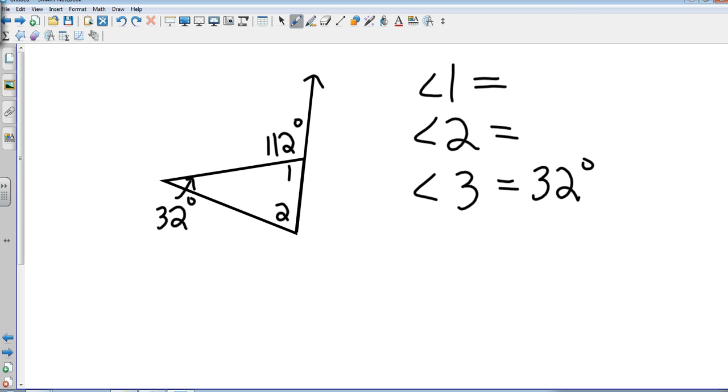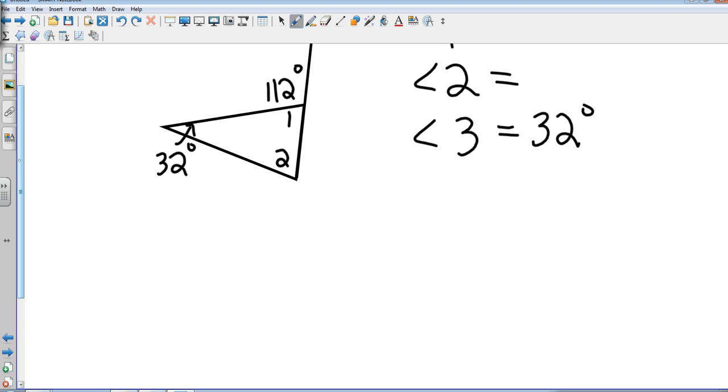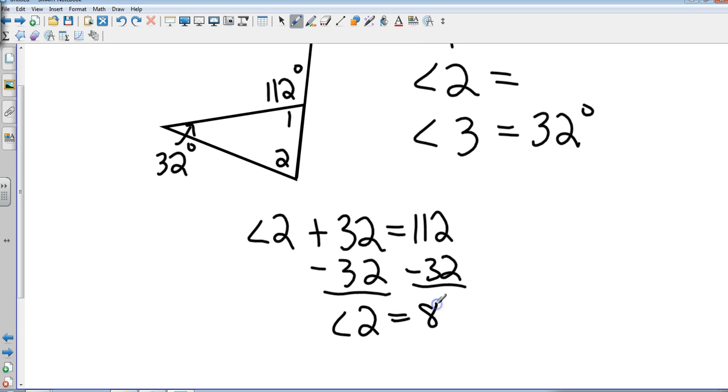Now we're back. Let's use the exterior angle theorem to find this. I'm going to take angle 2, well I want to keep this uniform because I've been drawing it that way. Angle 2 plus 32 equals 112. So I'm going to subtract 32 and that gives me angle 2 a measure of 80 degrees.